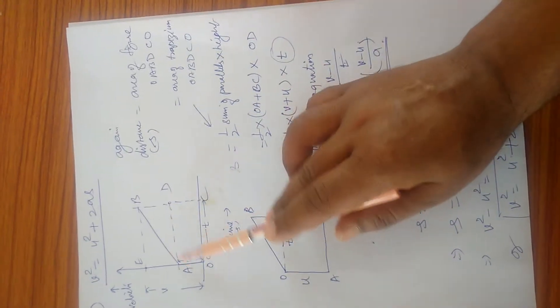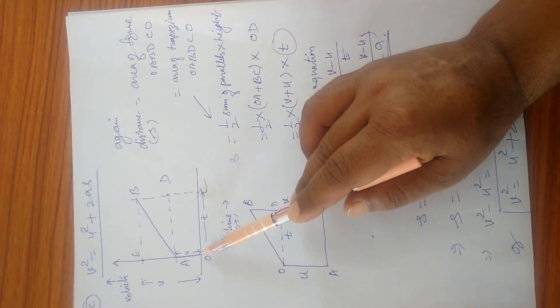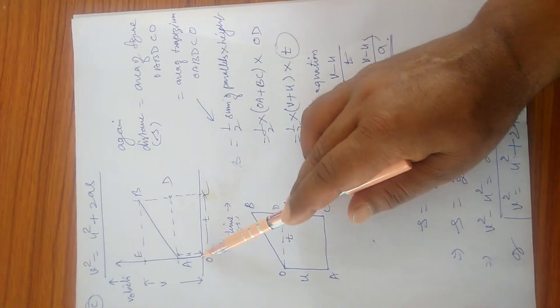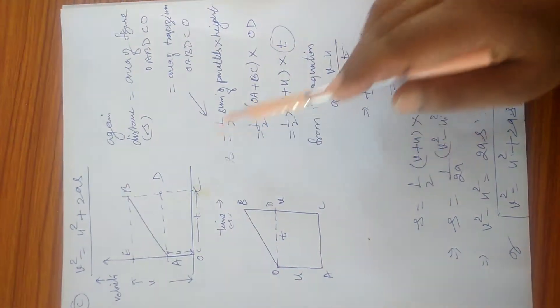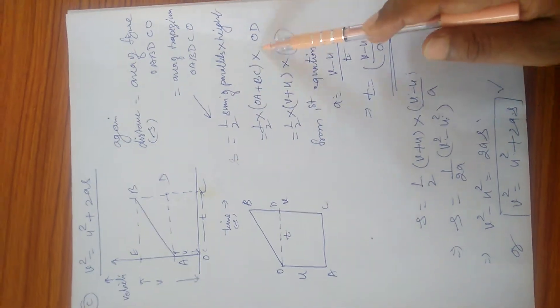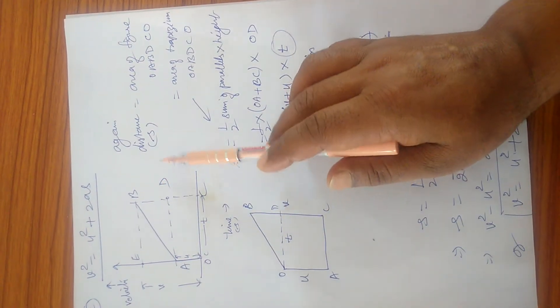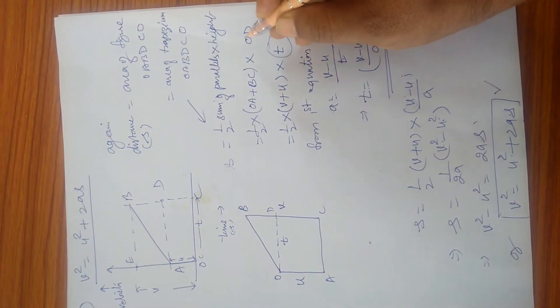Now this figure is a trapezium, so the area of a trapezium is one-half into sum of parallels into height. The parallel lines are OA and BC, so OA plus BC into height. The distance between them is AD.